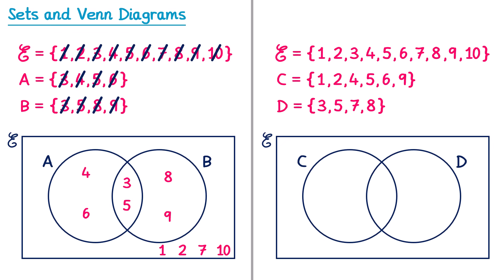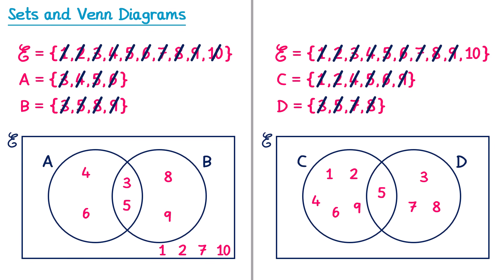For the second question, the number 5 is in both sets and goes in the middle — that's actually the only shared number. The numbers only in set C are 1, 2, 4, 6, and 9. The numbers only in set D are 3, 7, and 8. So far we've placed 1, 2, 3, 4, 5, 6, 7, 8, and 9 inside the Venn diagram, leaving 10 to go outside of the circles but still inside the universal set.